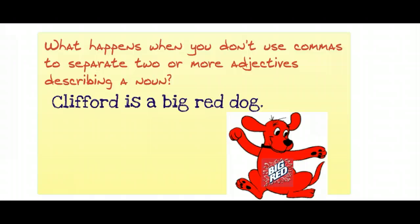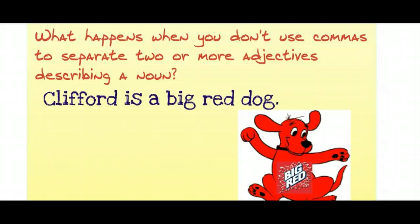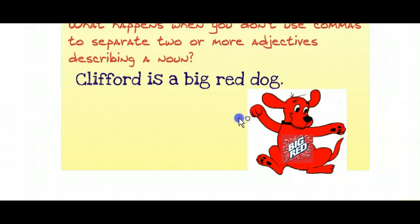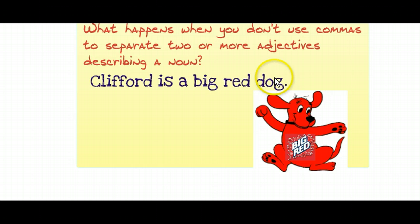What happens when you don't use commas to separate two or more adjectives? Let's look at one of my childhood favorite cartoons: Clifford the Big Red Dog. 'Clifford is a big red dog.' There's something wrong with that sentence. We have two adjectives — big and red — both describing the word dog, but there's no comma. The way this sentence reads, it's saying that Clifford is literally 'big red,' like he's made out of the soda or is their corporate sponsor. What we're trying to say is 'Clifford is a big, red dog.' He is a big dog and a red dog; we need a comma in between big and red.